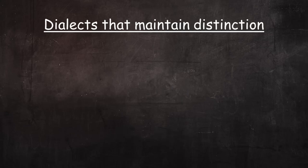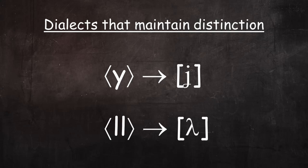In dialects that maintain the distinction, Y is pronounced as a palatal fricative or approximant, while double L is pronounced as a lateral approximant, which is usually referred to as elie, and which Spanish linguists generally represent with the symbol lambda.